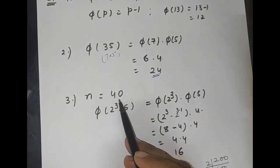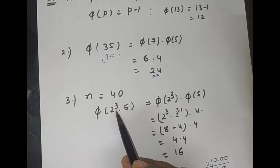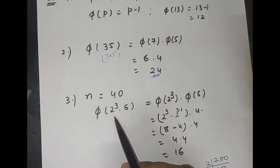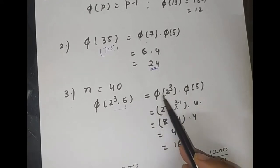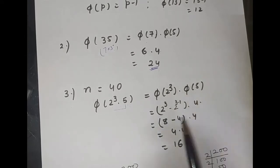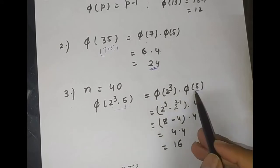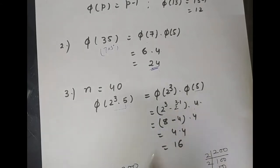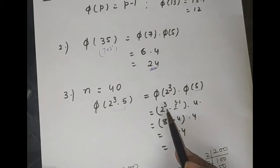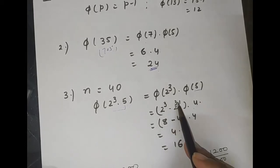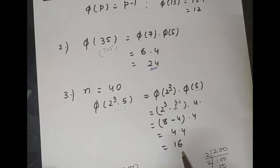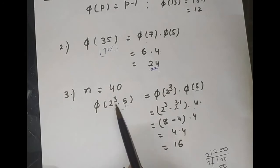If n = 40: we write 40 as 2³ × 5. Since gcd(2, 5) = 1, they are relatively prime. φ(5) = 4. For φ(2³), we apply the third formula: p^n − p^(n−1) = 2³ − 2² = 8 − 4 = 4. So φ(40) = 4 × 4 = 16.